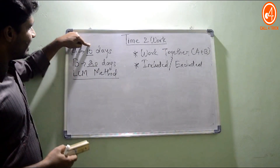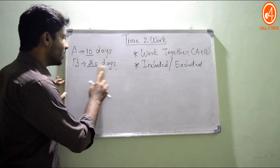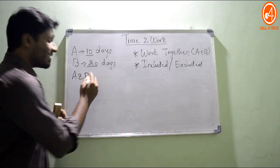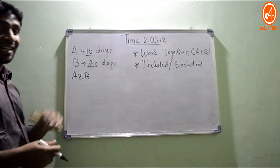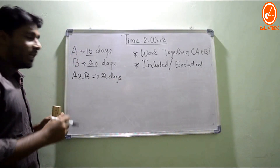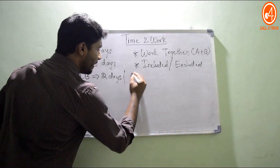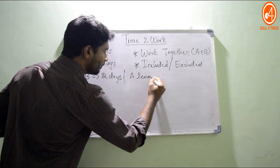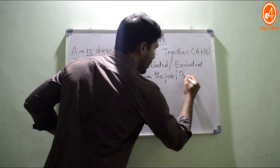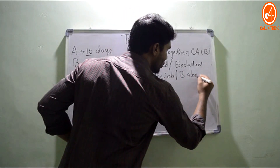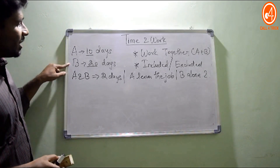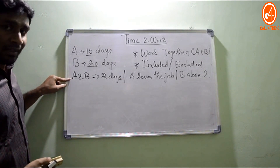We use the same question: A can do the work in 10 days, B in 20 days — just for understanding. The question states that A and B start working together, but they work only for two days. After two days, A leaves the job, and B alone continues. How many days will B take to finish the remaining work? That is the question.